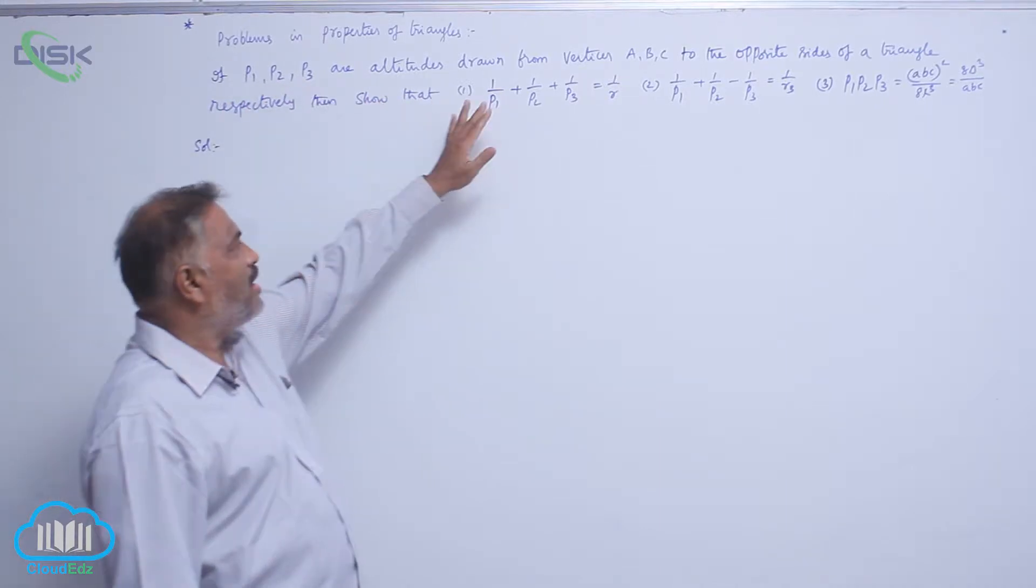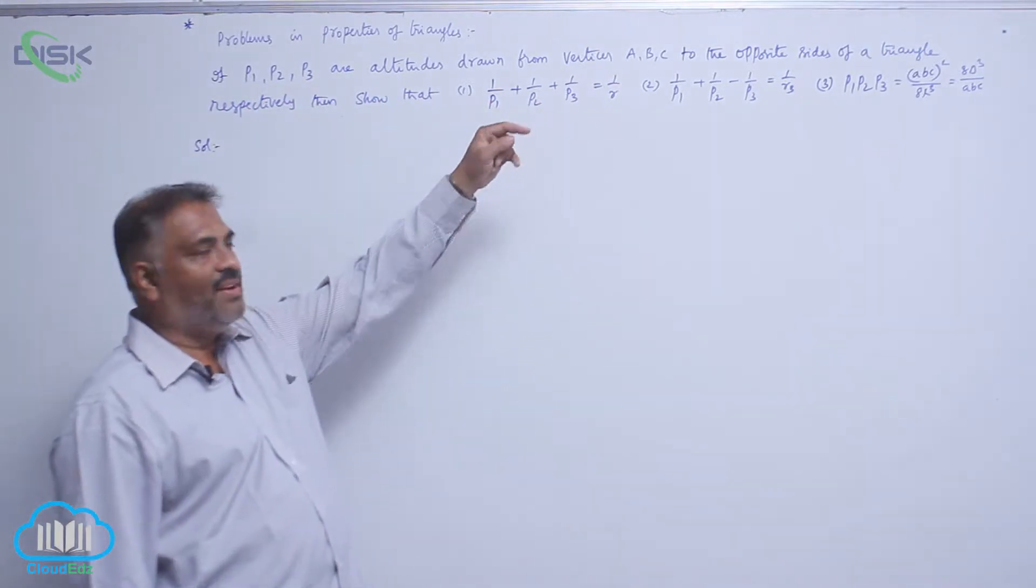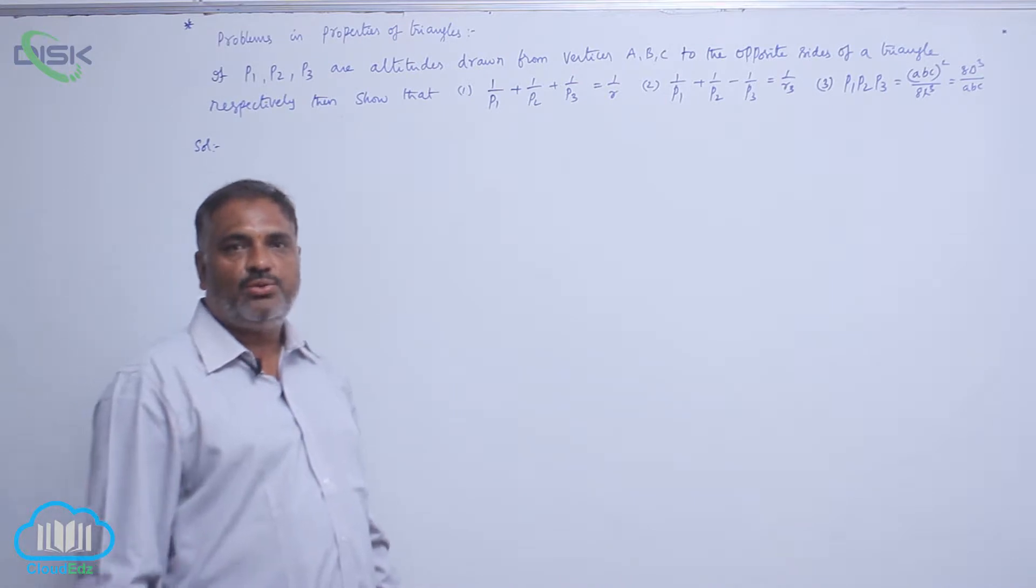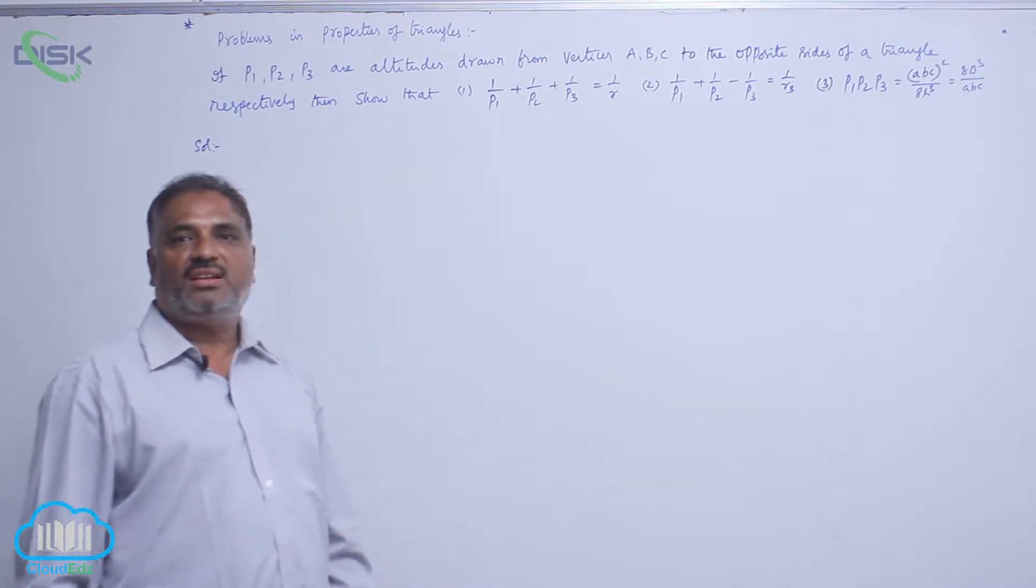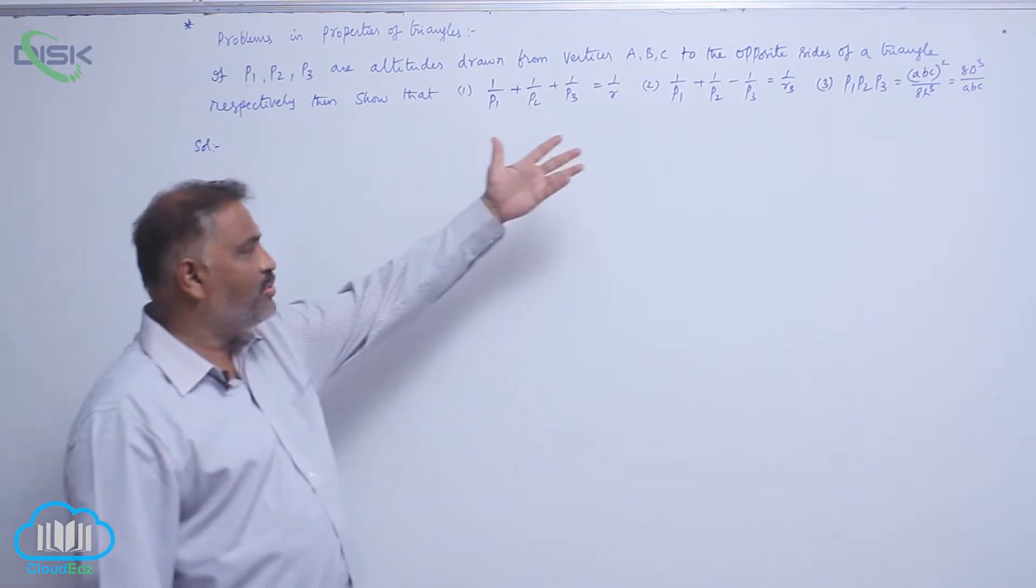If P1, P2, P3 are altitudes drawn from the vertices A, B, C to the opposite sides of a triangle respectively, we need to prove the results.